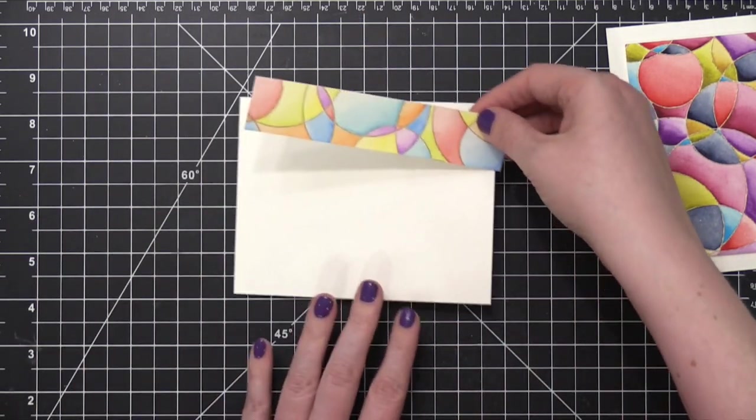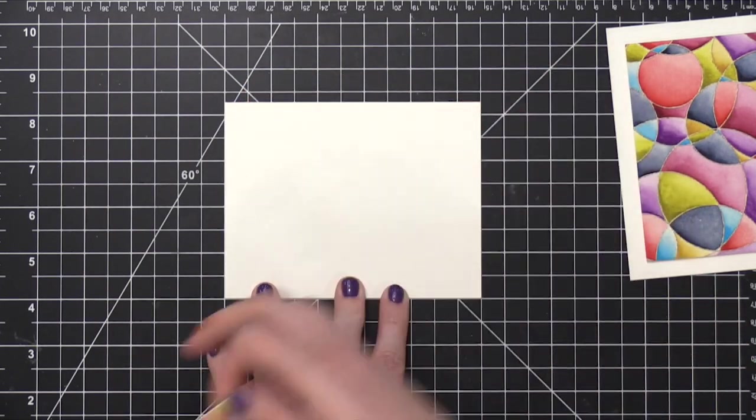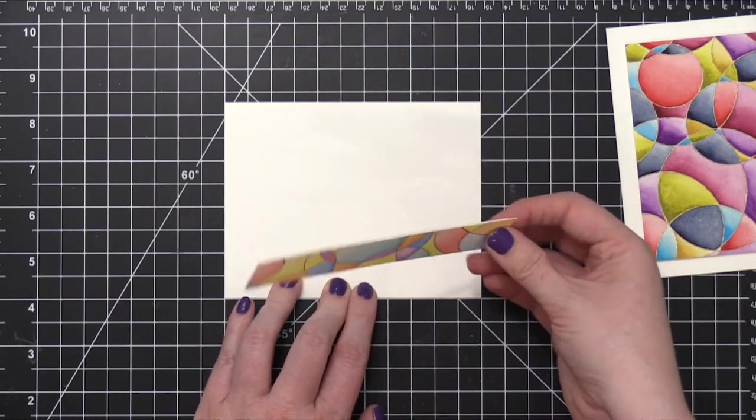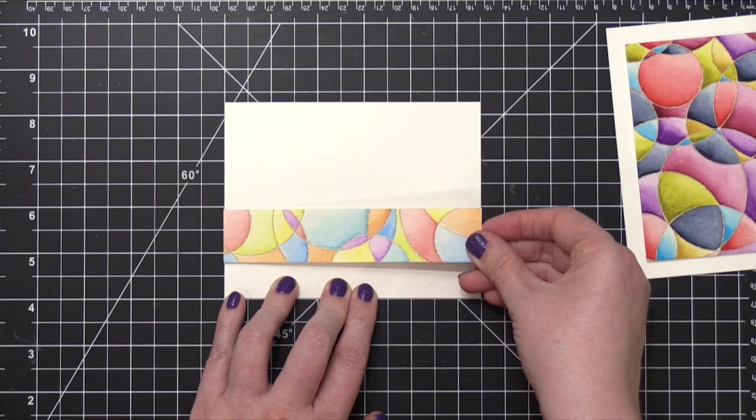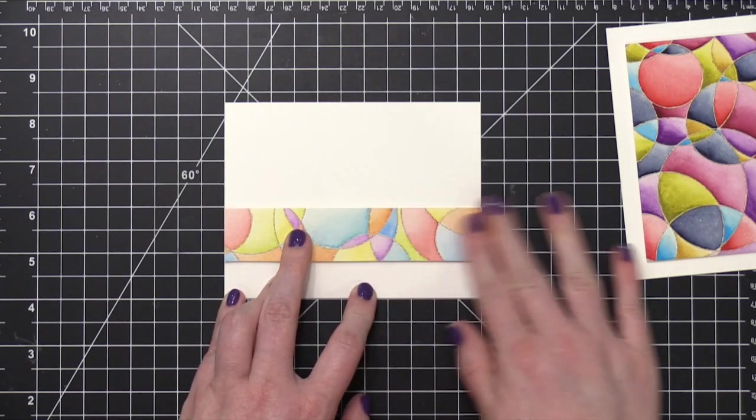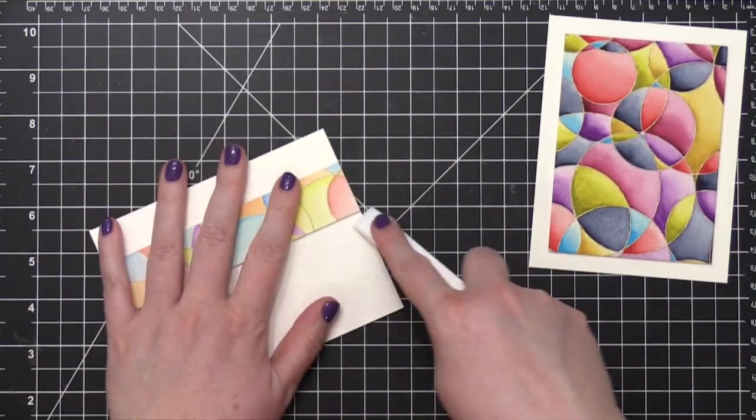And this one's going to go right across this one right here. So I'll go ahead and put my foam adhesive on the back. And then as I'm lining this up, I'm going to use my grid mat and put my card base directly into the squares on the grid. And then I can use the lines across the top to help line up so that it's perfect.